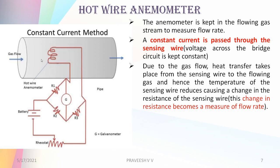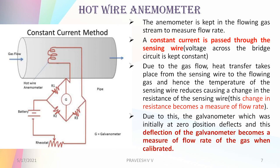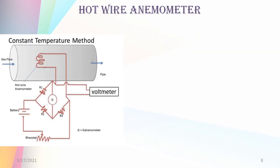The galvanometer, which was initially at zero position, will deflect due to the change in resistance caused by the flow. This deflection of the galvanometer becomes a measure of the flow rate of the gas when calibrated. That is the constant current method.